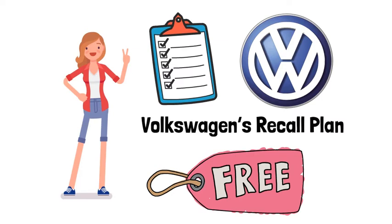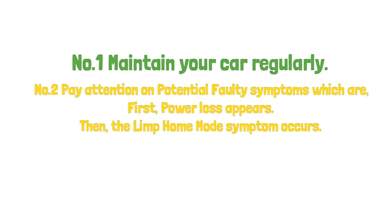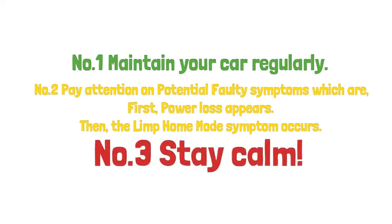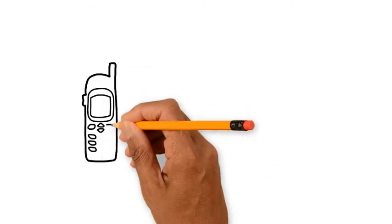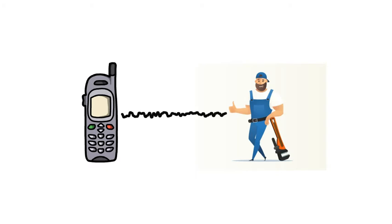So let's go over today's talk. Number one, maintain your car regularly. Number two, pay attention to potential faulty symptoms, which are: first, power loss appears, then the limp home mode symptom occurs. Number three, stay calm. If you're really unlucky to have seven-speed DSG gearbox problems happen, buy the lotto. Kidding. Stay calm and pull over safely like Amy did. Contact your repair shop mechanic for professional assistance. Everything will be fine.